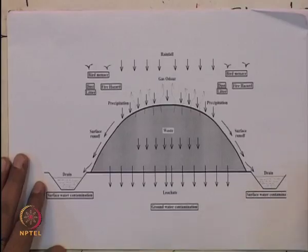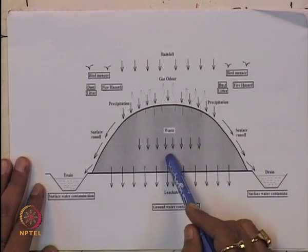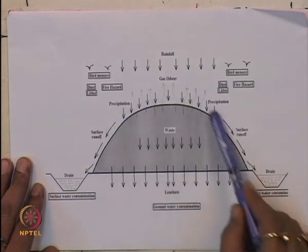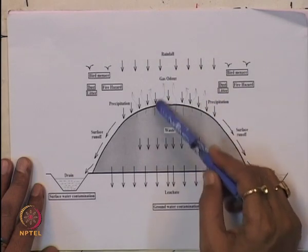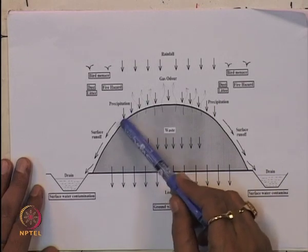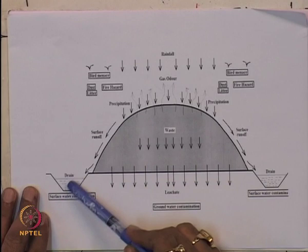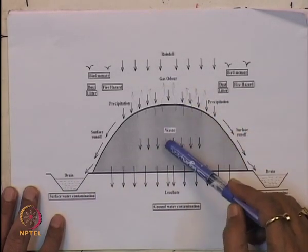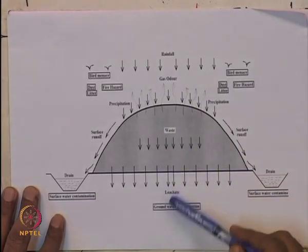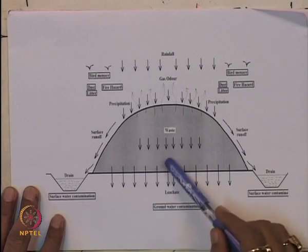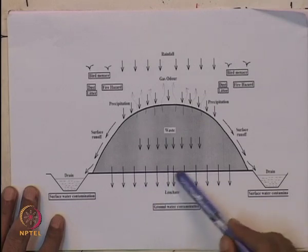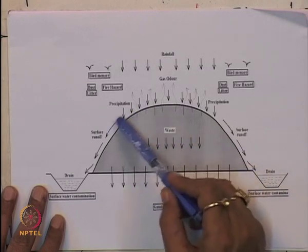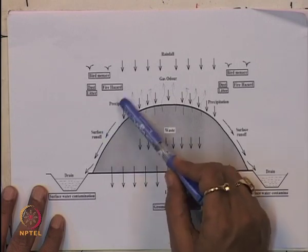Here you can see that leachate formation causes contamination of groundwater and surface water. This is the waste material and there is a possibility that rainfall may occur. If you keep it open, in this open landfill, rain water can pass through; there is a surface runoff which can pass through the drain. The surface water will also be contaminated. Leachate can pass through the ground and then groundwater will also be contaminated. There is also a possibility of fire hazard.